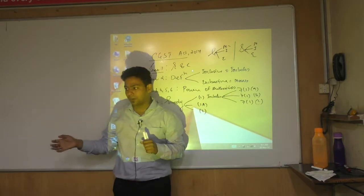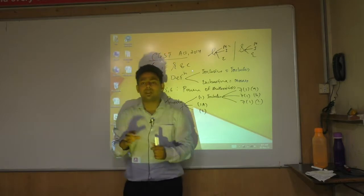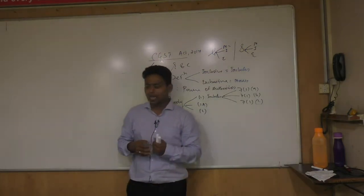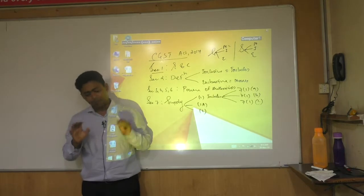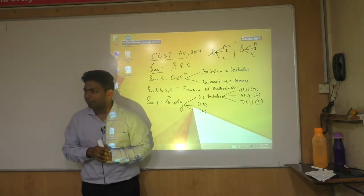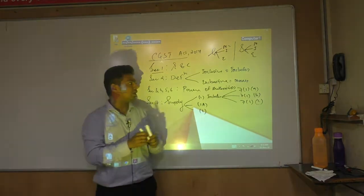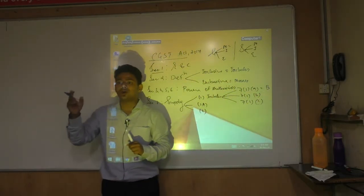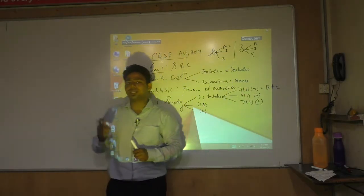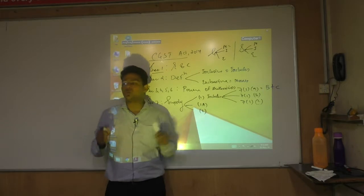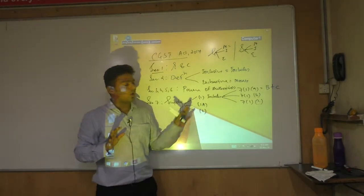Section 7.1a covers all forms of supply — such as sale, transfer, barter, exchange, lease, license, rental, and disposal — by a person. And 'person' means individual, HUF, AOP, BOI, company, firm, LLP, even a local authority. The supply must be for a consideration and in the course or furtherance of business. So under clause 7.1a, you must satisfy two minimum conditions: the business condition and the consideration condition. Then only your activity will be called a supply. This is the core of GST law.